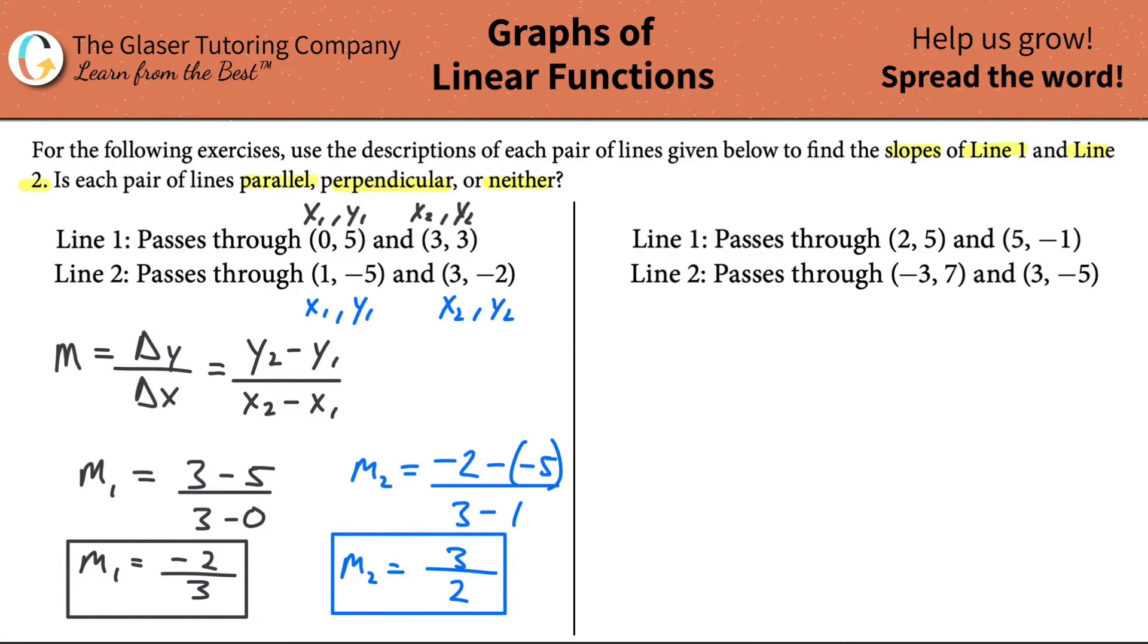The next thing we have to check is, are they perpendicular? The two values have to be negative reciprocals or opposite reciprocals of one another. That means that one has to be positive or negative, and the other one has to be the opposite sign. We have a negative and a positive, so we already have a check there. The next thing is to see if the fractions are reciprocals of one another, meaning are they flipped versions of each other. If I have 2 over 3 here, and this is 3 over 2 here, that's a reciprocal. These are opposite reciprocals of one another, and therefore, they are perpendicular.